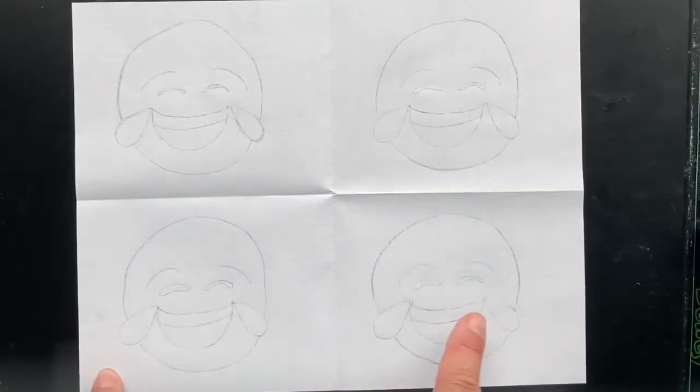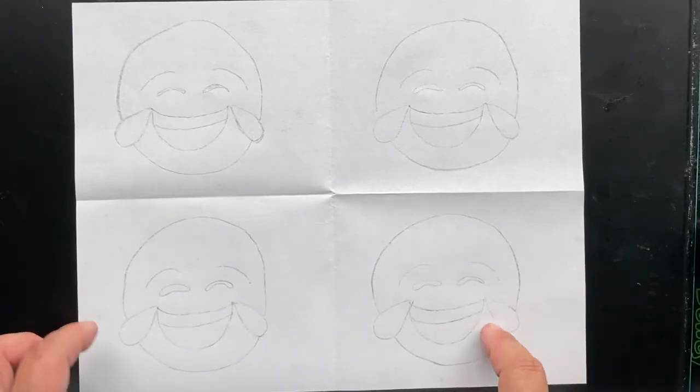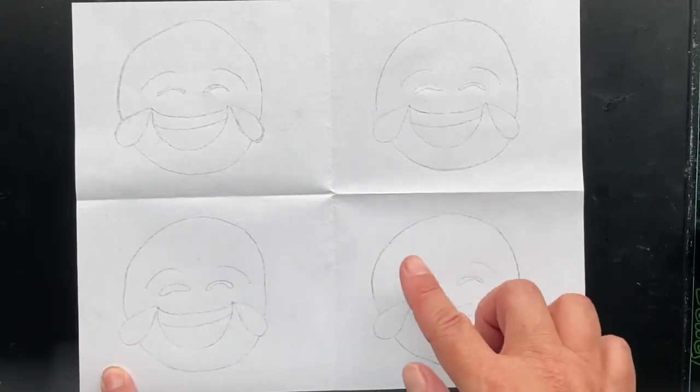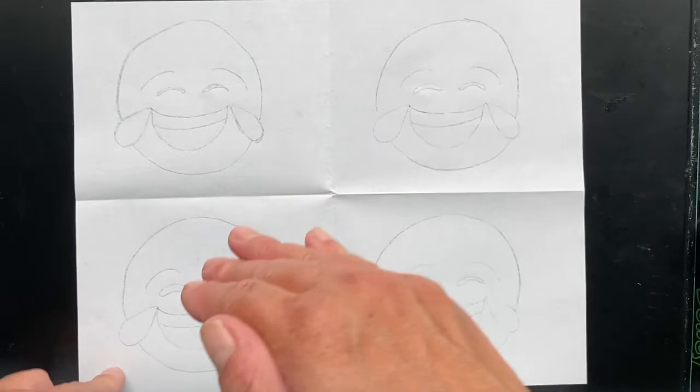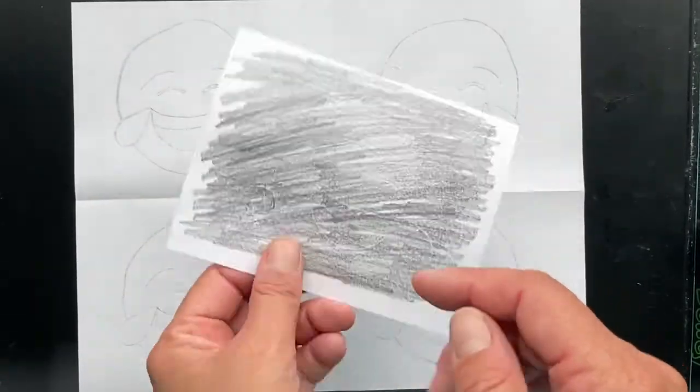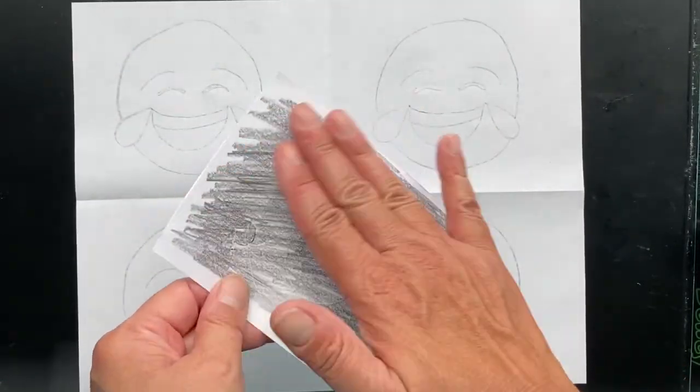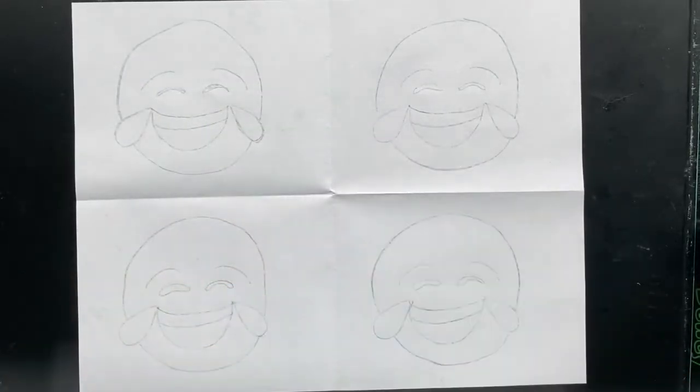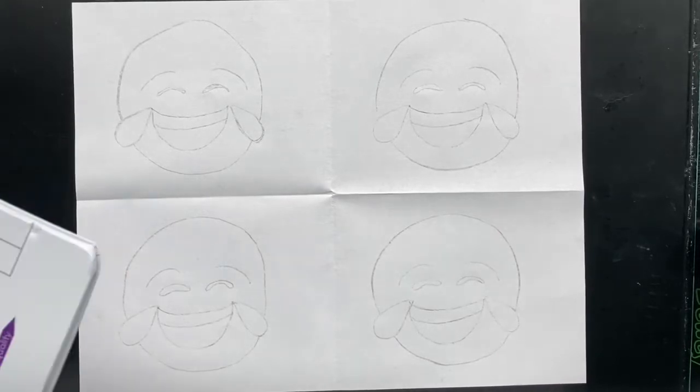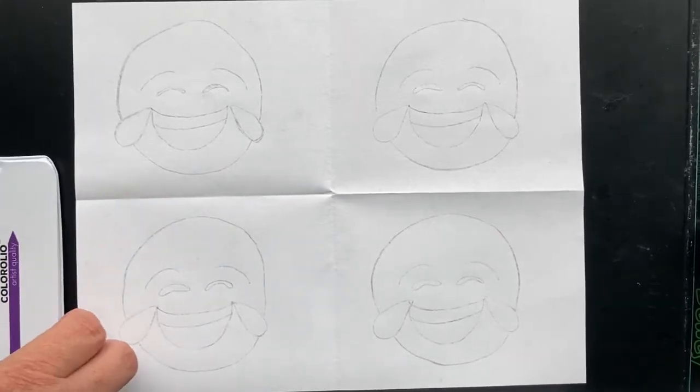Once you have all of your objects traced onto your paper, and I should have added, make sure you're pressing hard when you're tracing so it'll show up. And if it seems like it's not transferring onto your paper, you can flip your paper over again, scribble some more on the back and that'll put more graphite on, and then you should be able to finish tracing.